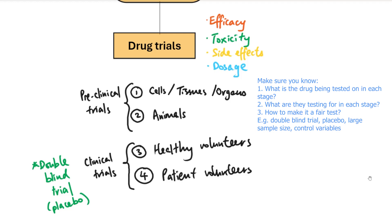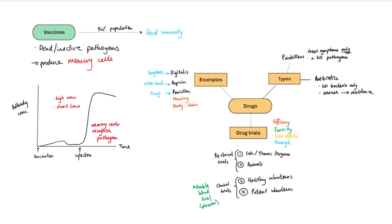Drug trials can be a four to six marker exam question. You may be asked to design a drug trial, describe the four stages and the purpose of each step, and explain how to make it a fair test — mentioning the double blind trial, the placebo, and control variables. For combined sciences, the key content is: vaccines and memory cells, two types of drugs, three drug examples with origins, and the four stages of drug trials.